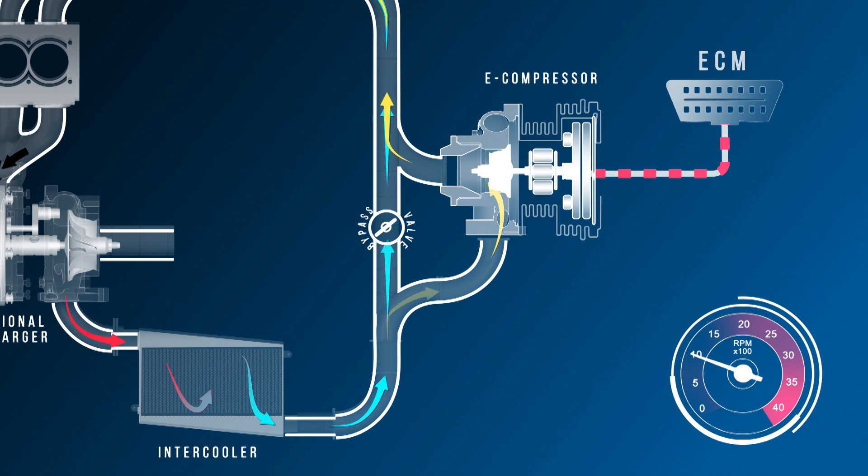Somewhere between 1100 RPM and 1500 RPM, the bypass valve fully closes, diverting the conventional turbocharged air in series through the e-compressor only.